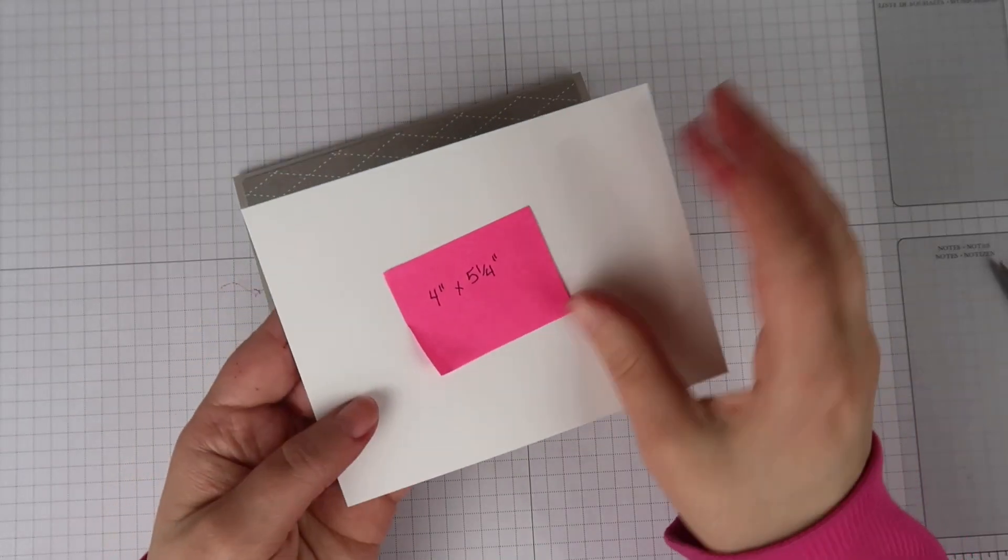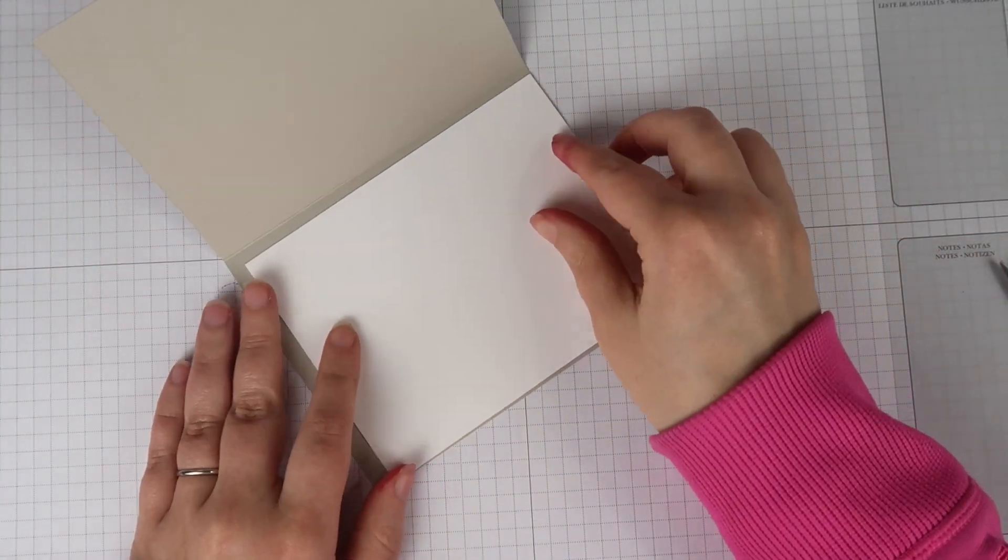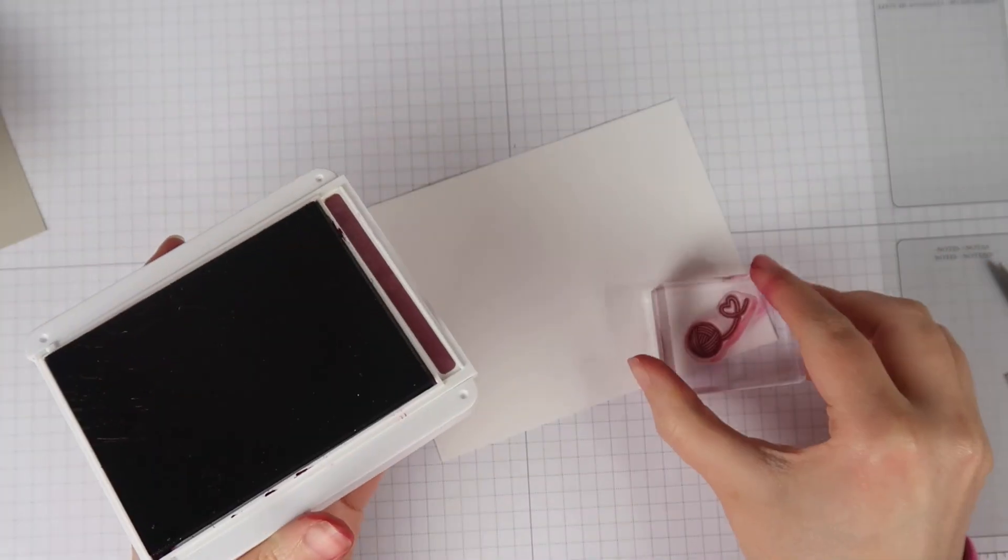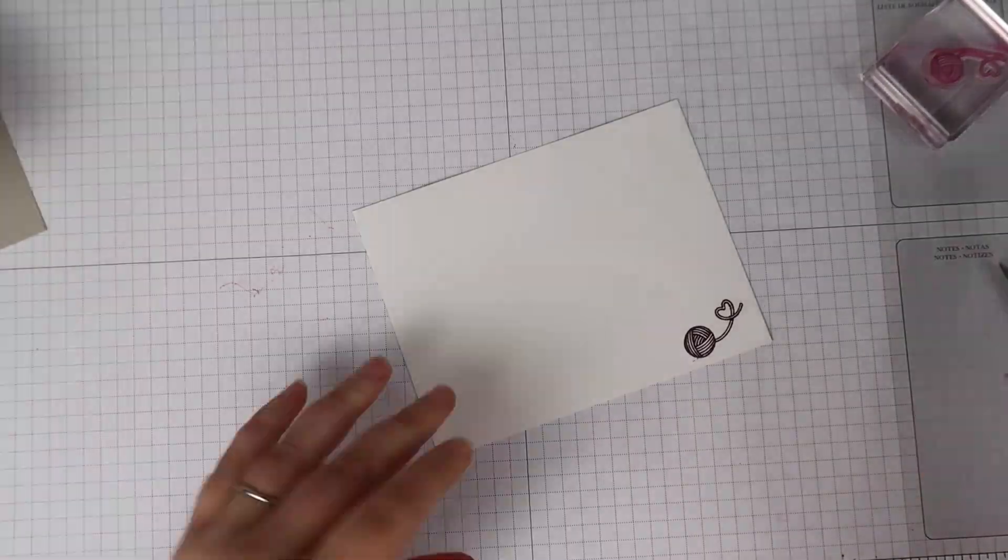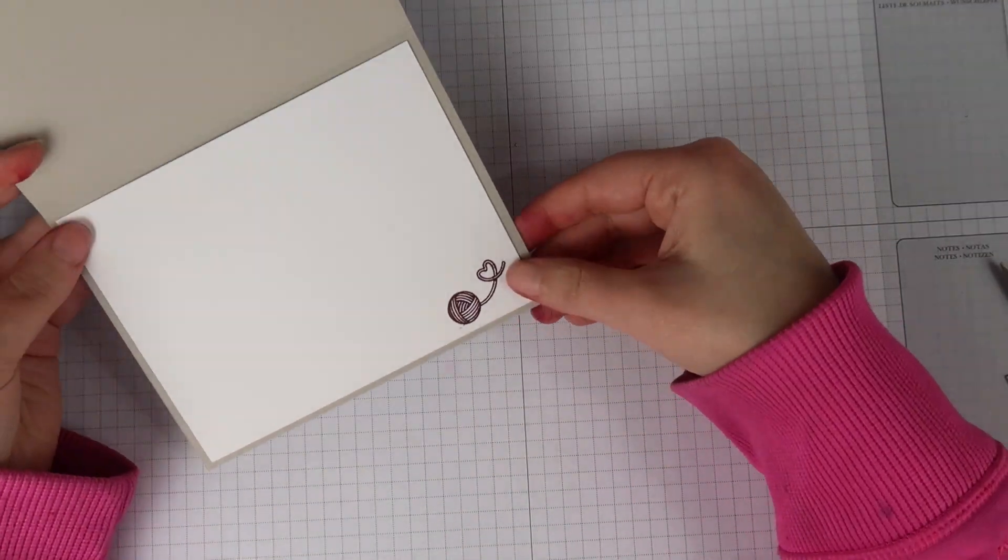And now I'm going to work on the inside of my card. I have a piece of whisper white cardstock that's four inches by five and a quarter inches. And I'm just going to do a little bit of basic stamping on this. I just took the ball of yarn that came in the stamp set and I stamped that in the corner and then I'm just going to go ahead and glue that down.